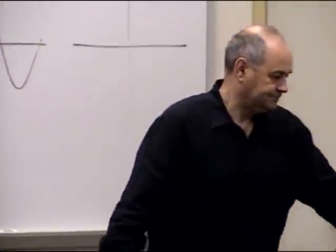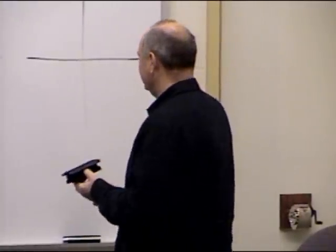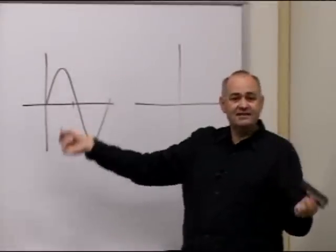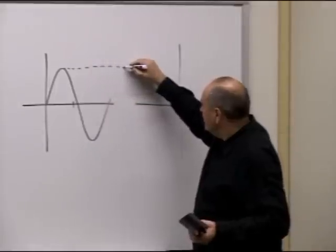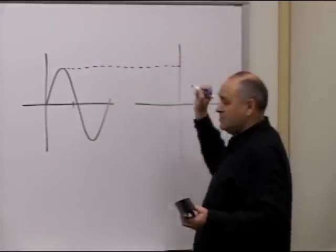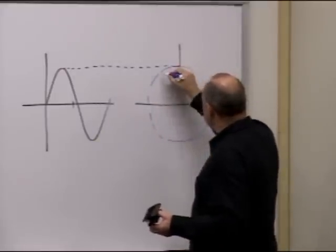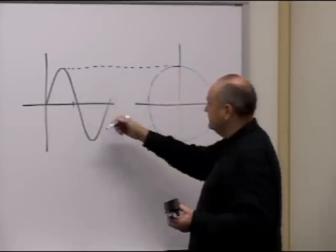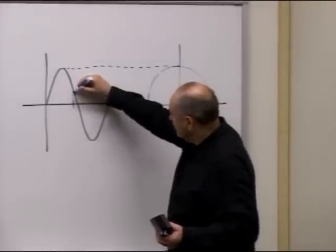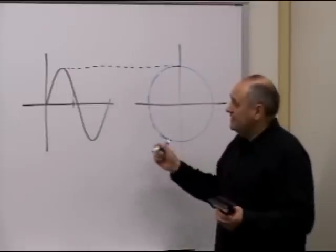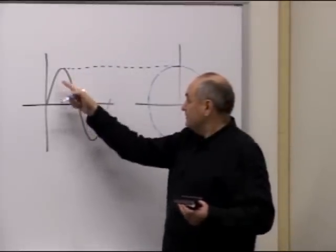In order to find a phasor at a particular instant, we have to recognize that the length of the phasor is equal to the peak value of that electrical quantity. So you have to look at the highest value and recognize that the head of the phasor has to be somewhere on a circle with radius equal to the peak value. The second thing is that the projection of the phasor on the vertical line has to correspond to the instantaneous value of that electrical quantity.